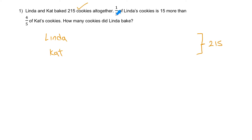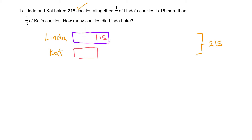Moving on: one-third of Linda's cookies. This is one third, so there are two other thirds as well. One-third of Linda's cookies is 15 more than four-fifths of Kate's cookies. So this one-third is 15 more than four-fifths of Kate's. That means Kate's portion shown is four out of five units. Let's draw one, two, three, four units — this is four-fifths of Kate's cookies.